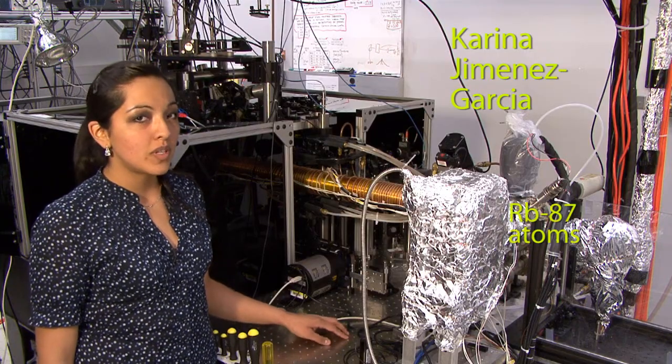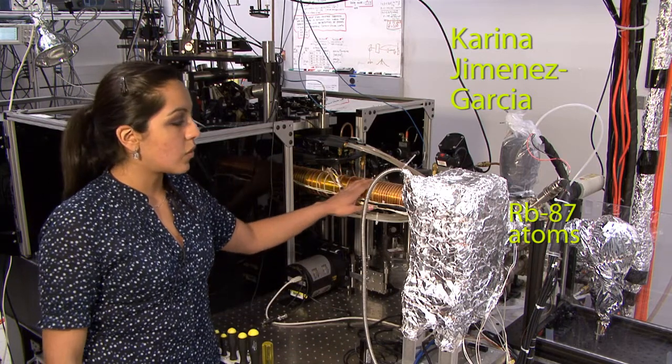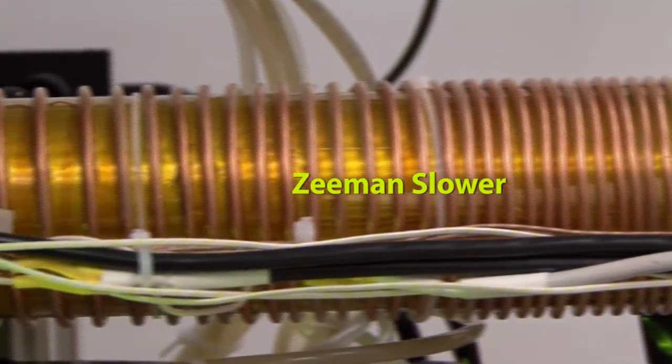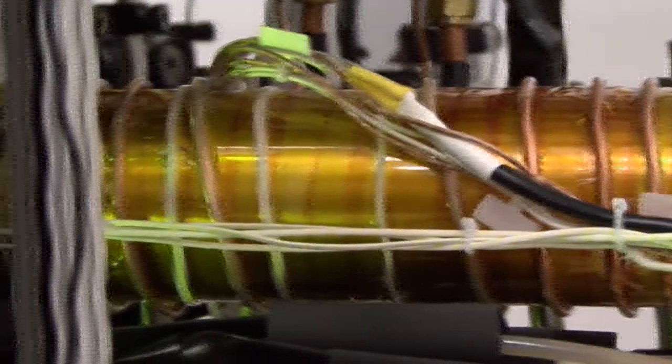We prepare a beam of rubidium-87 atoms and make it travel through this slower from right to left. Here the atoms are gradually stopped by a combination of magnetic fields and laser beams.